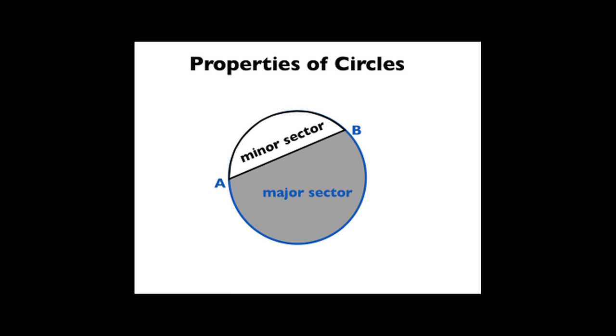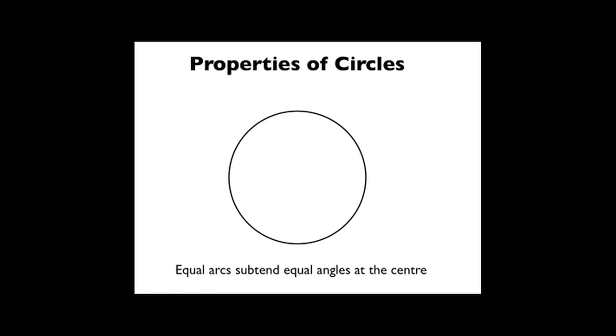Then we can also break the circle into a minor sector and a major sector where you draw a chord across and you actually look at the area between the chord and the circumference. So obviously once again you have a big one and a small one.